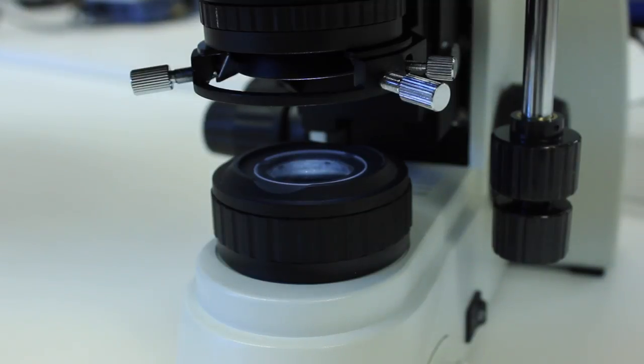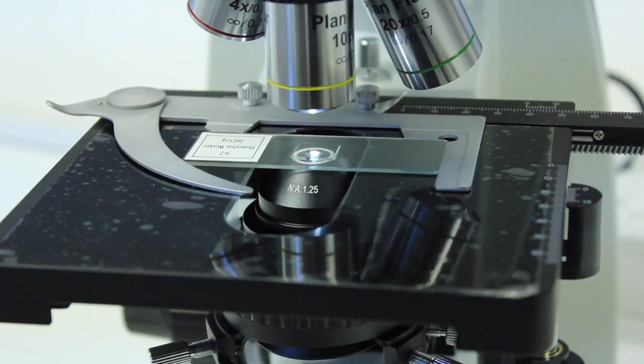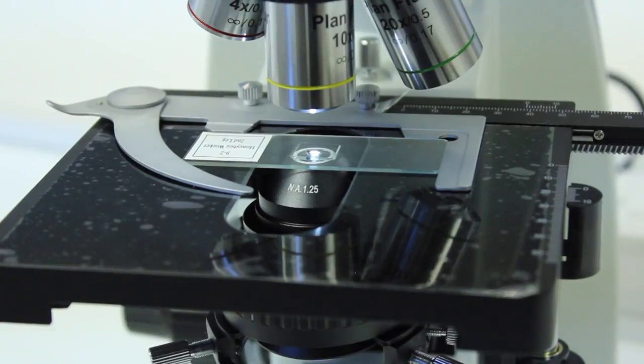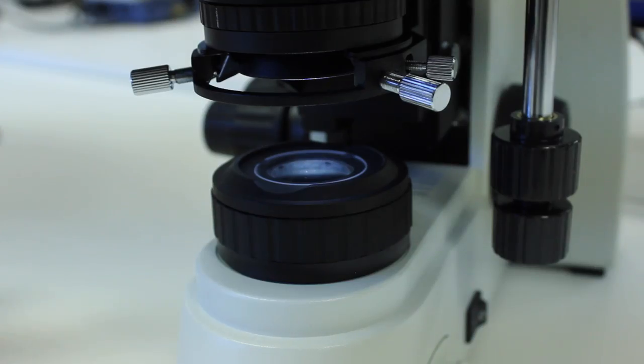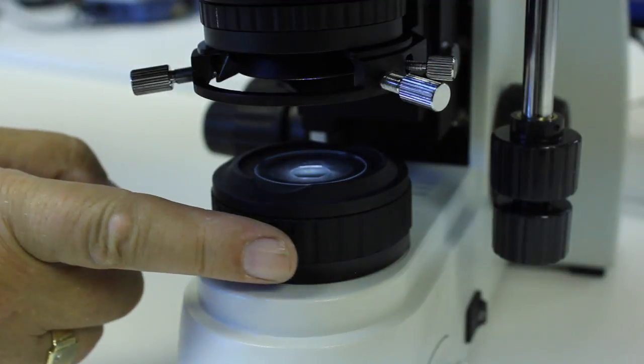We're now going to go through the process of setting up Kohler Illumination. Put a slide on the stage and put it in focus with the x10 objective, and then fully close the field iris down here so it is completely closed.